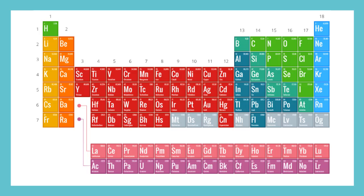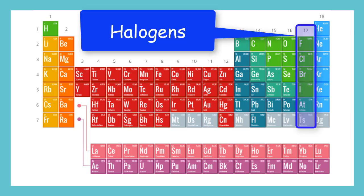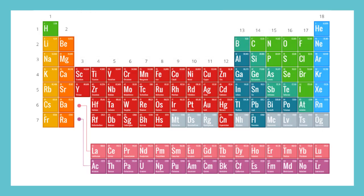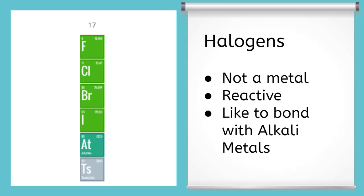Over here in group 17, we have the halogens. They run from periods 2 to period 7. Halogens are not metals. But they are reactive. Especially the top element. As you work your way down the periods, they become more stable. Halogens like to make bonds with elements from group 1, the alkali metals.